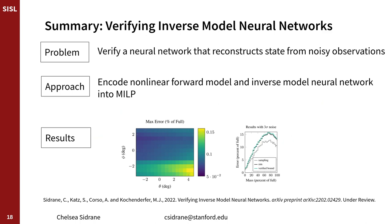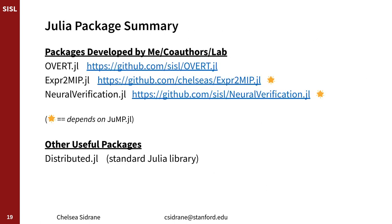So in sum, this is our approach to verify a neural network that reconstructs the state from noisy observations. We encoded the nonlinear forward model and inverse model neural network into a mixed integer linear program. The Julia packages we developed, as well as the Julia packages developed by others that we used to make this project happen, are listed here. I hope you check them out and use them in your projects. Thank you for listening.